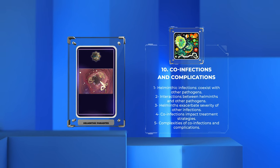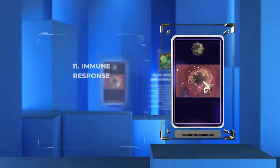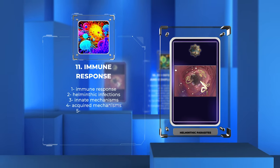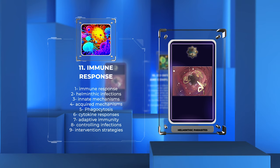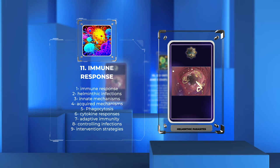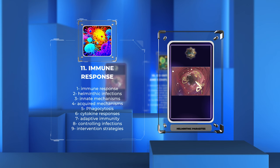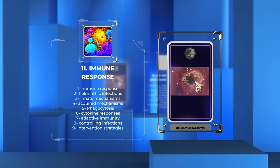The immune response to helminthic infections involves both innate and acquired mechanisms. Phagocytosis, cytokine responses, and adaptive immunity play important roles in controlling these infections. Understanding these processes can improve intervention strategies.